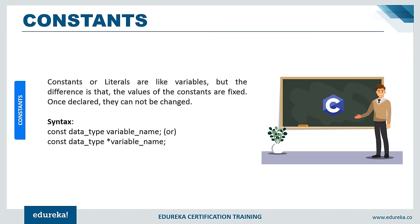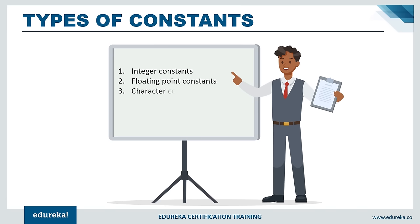Constants, or literals, are like variables, but their values are fixed — once declared, they cannot be changed. If you declare a variable with the const keyword in front, you cannot change its stored value. The syntax is: const followed by data type and variable name. Types of constants in C include integer constants, floating-point constants, character constants, string constants, and octal or hexadecimal constants.